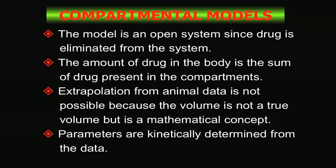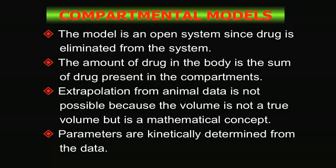Compartmental models are open systems — once the drug is eliminated, it's gone. The total amount of drug in the body is the sum of drug present in all compartments: some in the stomach, some in the blood, some in the liver. Extrapolation from animal data is difficult because the volume is not a true volume but a mathematical concept called volume of distribution. Compartmental models are used to extrapolate to human studies but carry some risk in how well they extrapolate.